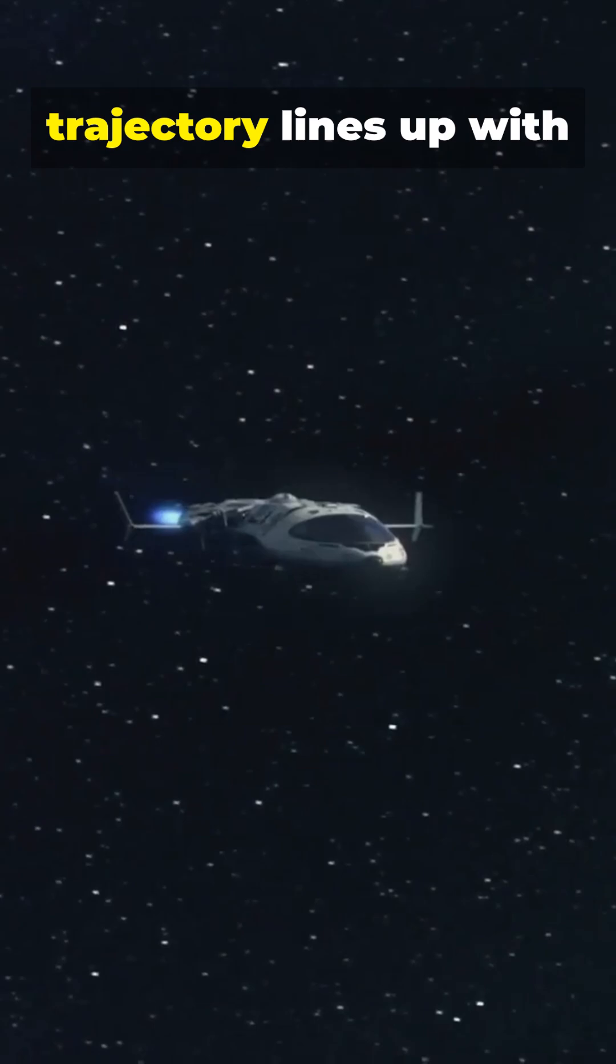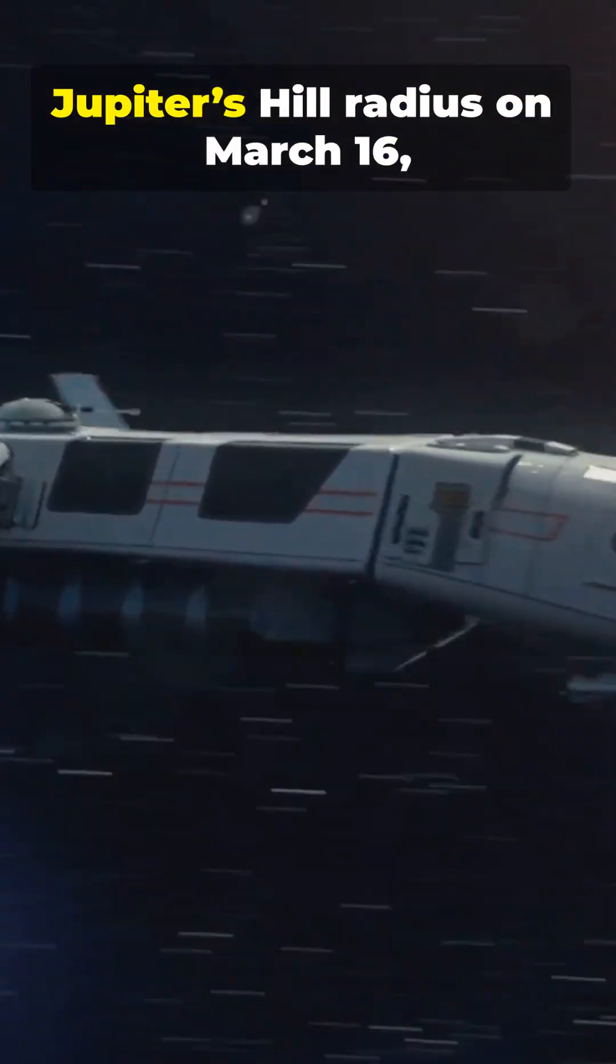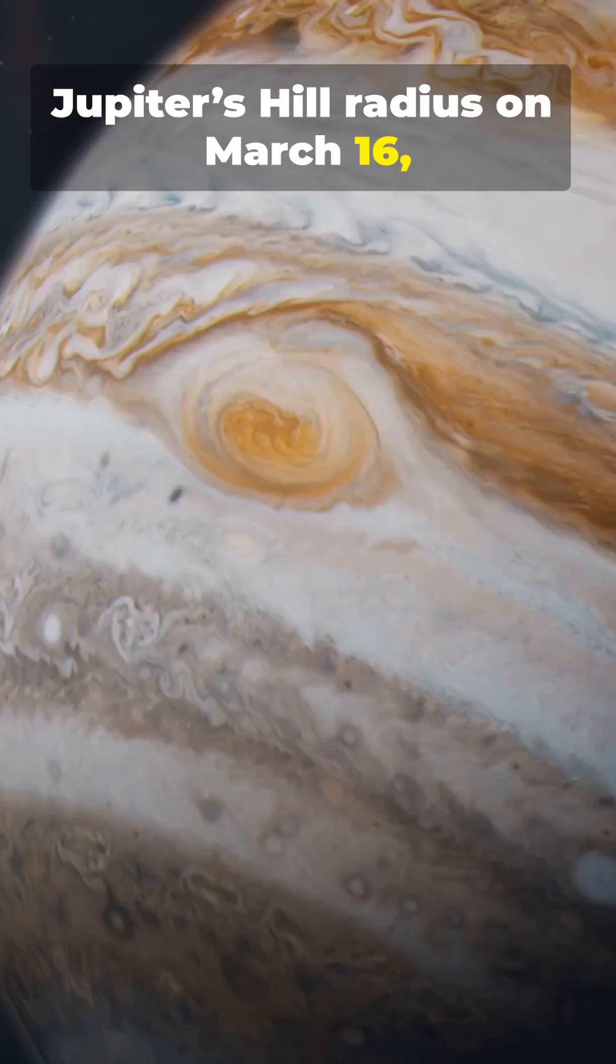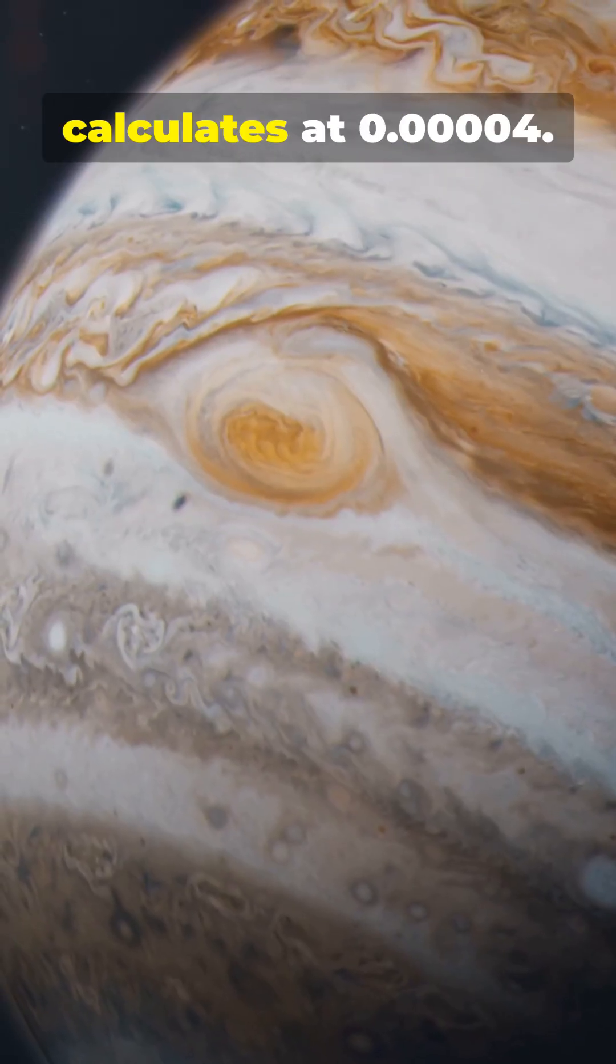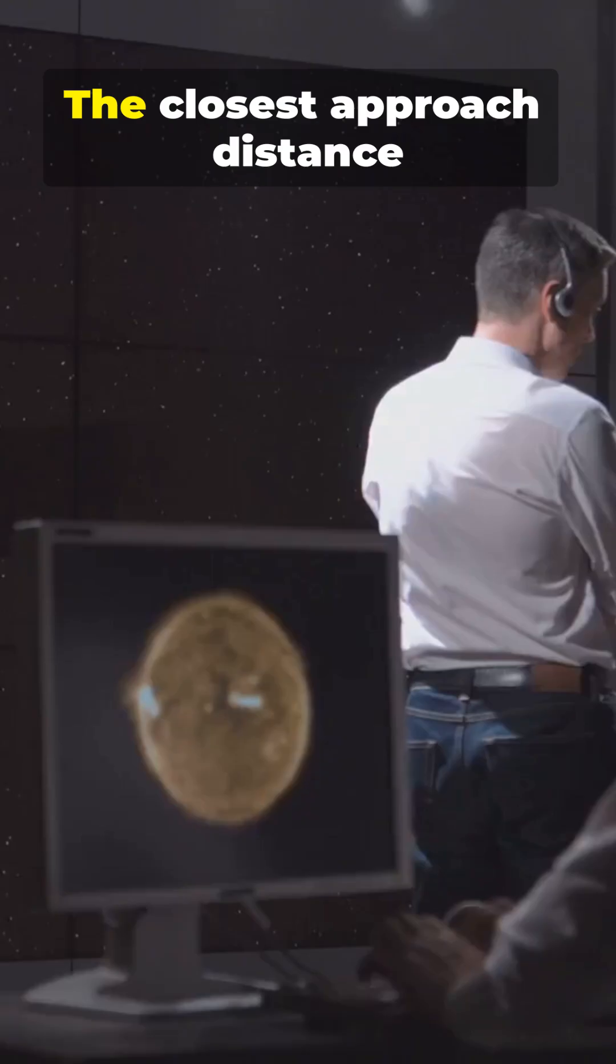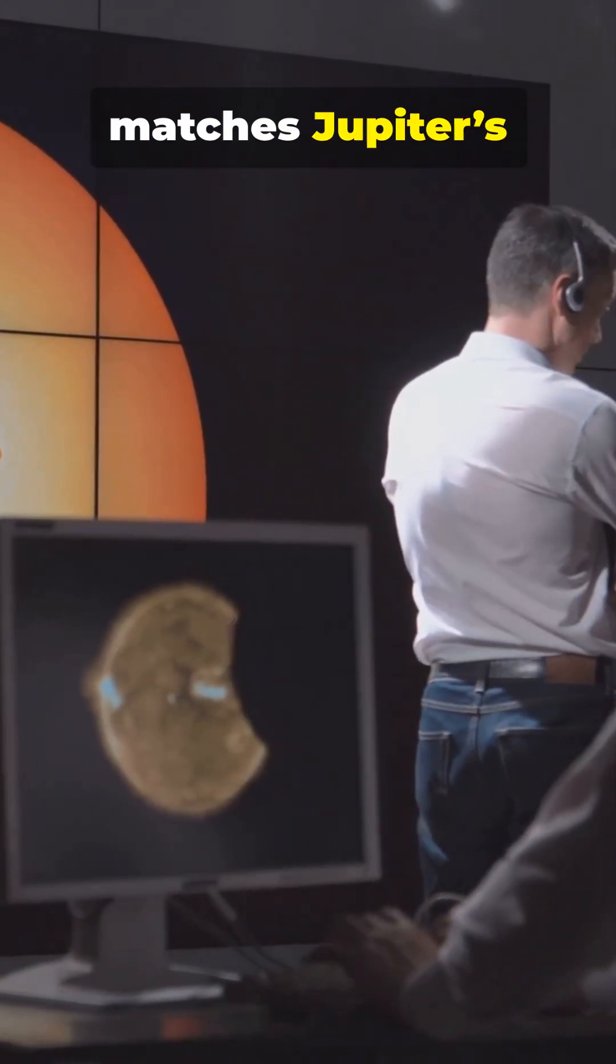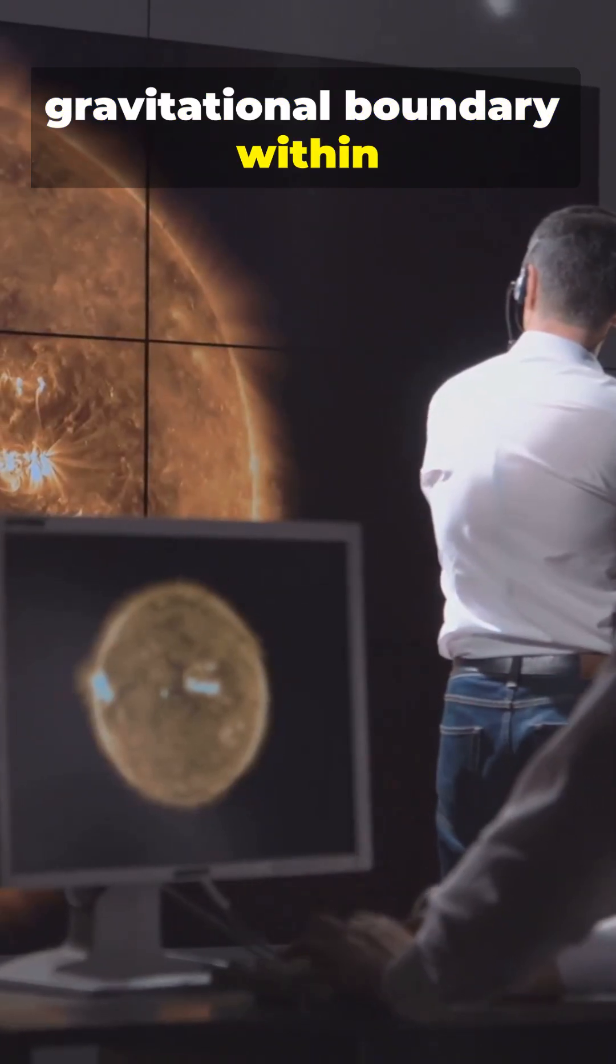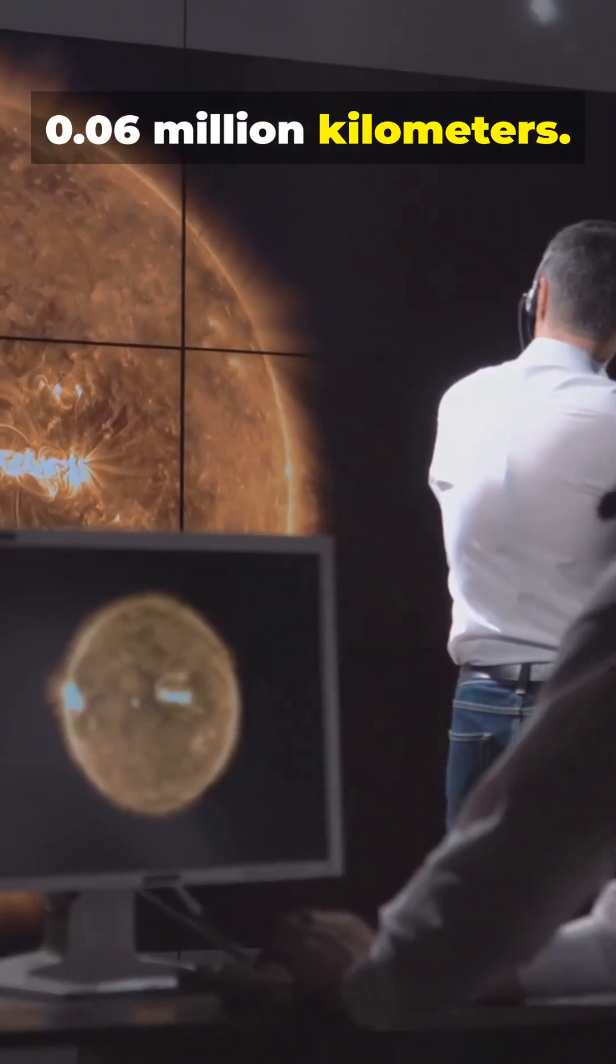He argues the object's trajectory lines up with Jupiter's hill radius on March 16, 2026, with odds he calculates at 0.0004. The closest approach distance matches Jupiter's gravitational boundary within 0.06 million kilometers.